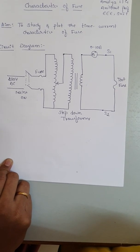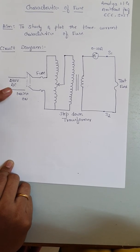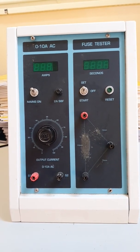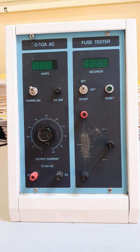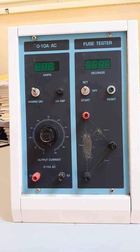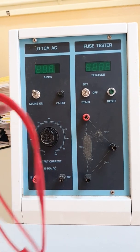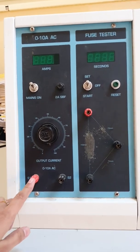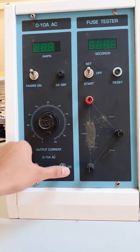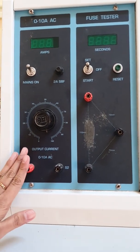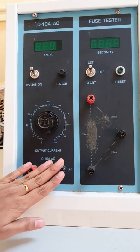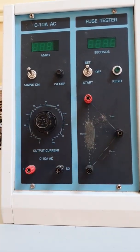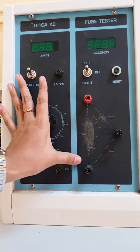For this experiment, the apparatus required are the fuse model and connecting wires or patch cords — only two patch cords are needed. The experimental setup has terminals S1 and S2, receiving supply from the step-down transformer, which connects into the fuse material. There are three terminals for fuse connection, with the distance between them labeled.